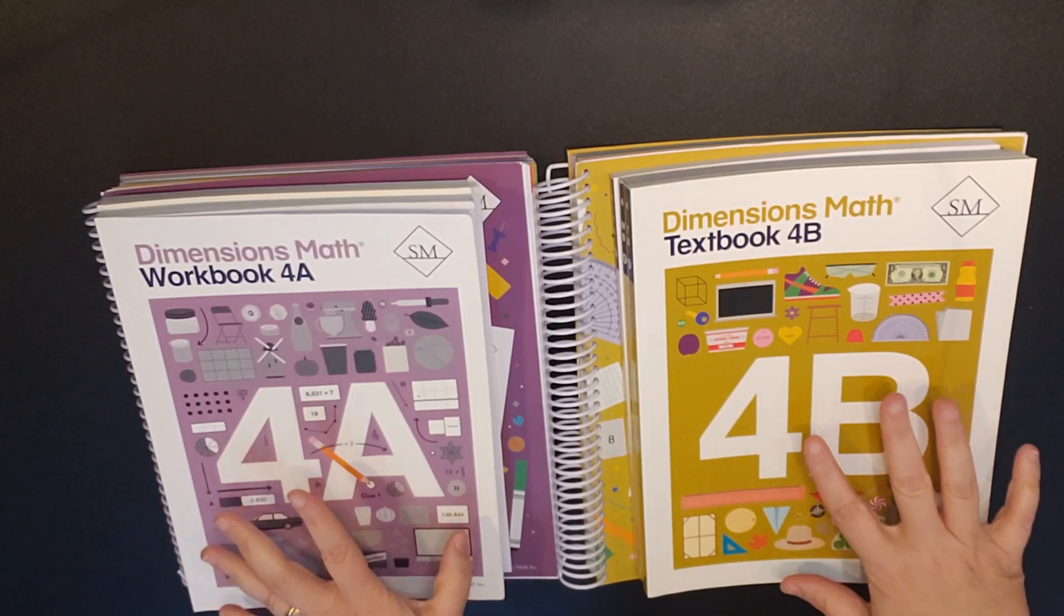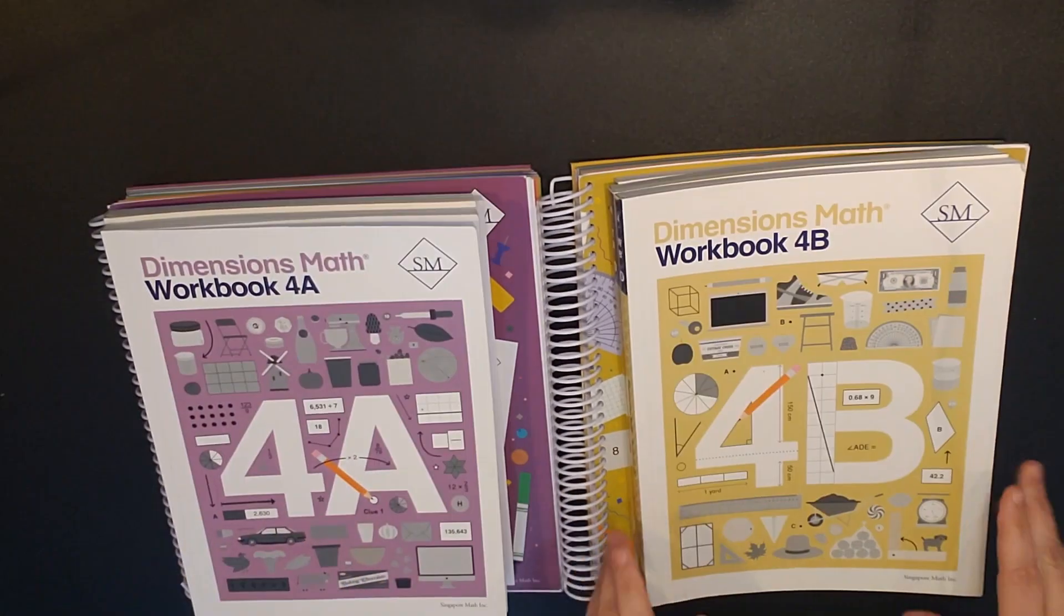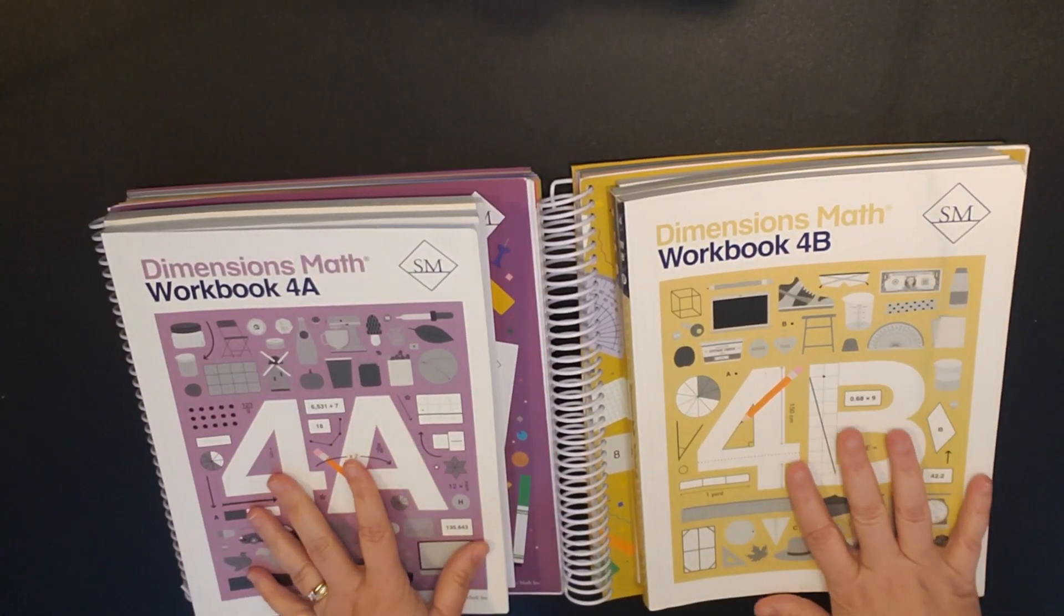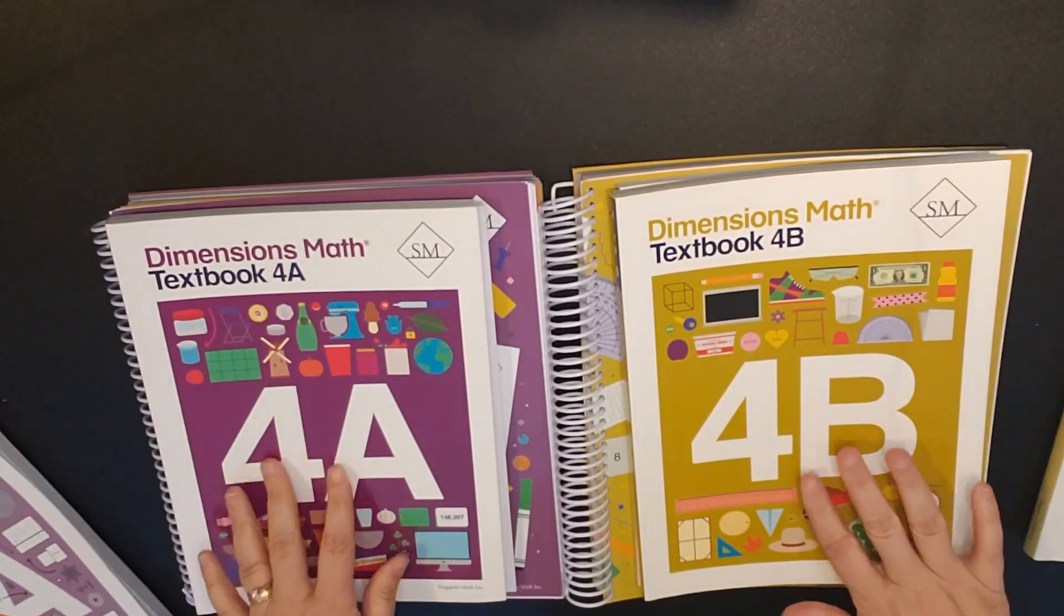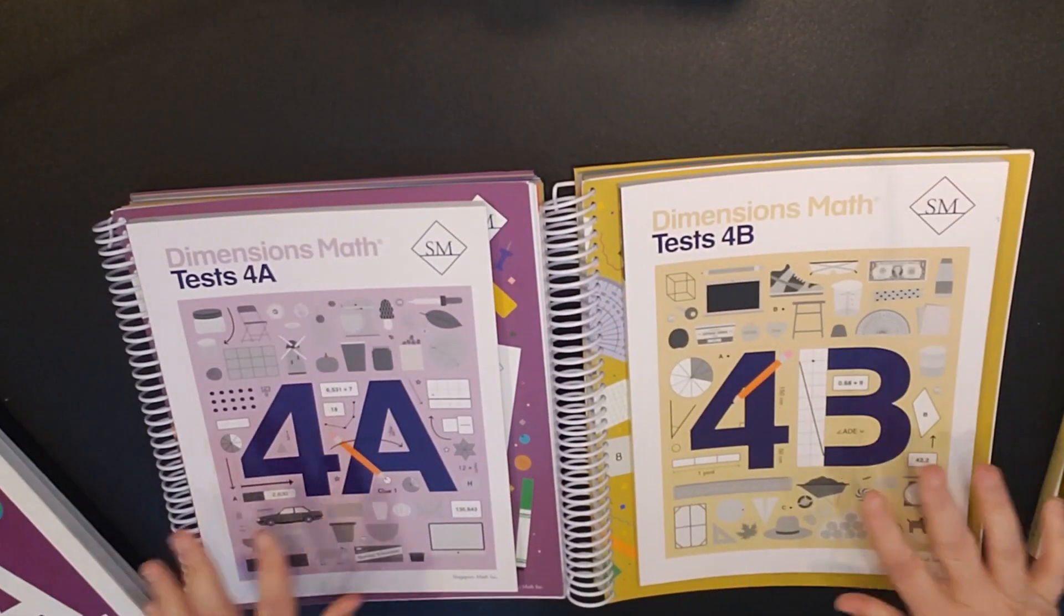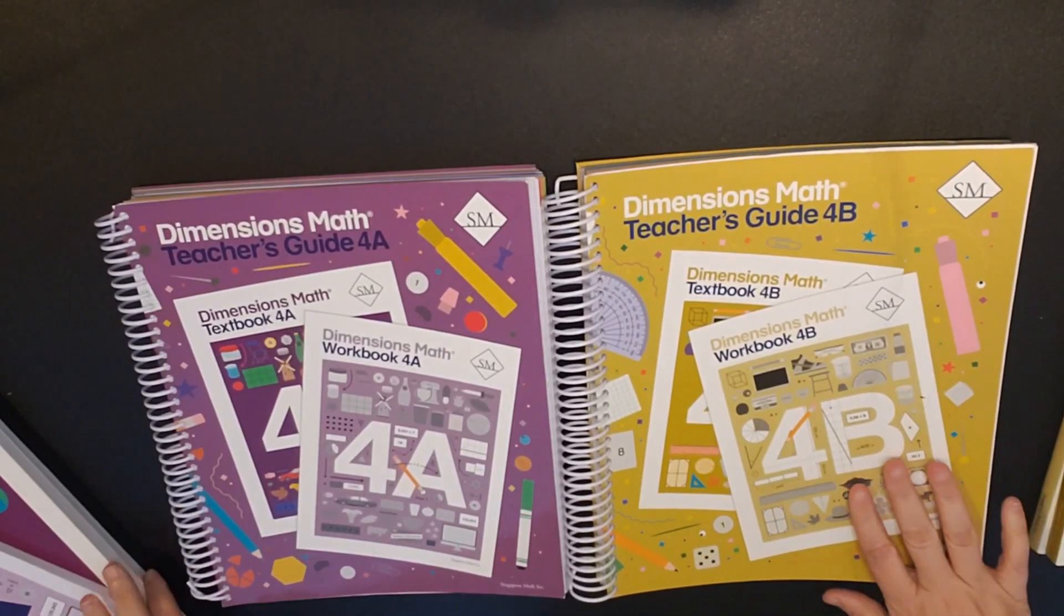So you have A and B. A would be your first semester, B your second. For each semester you have a workbook, a textbook, tests, and then the teacher's guide.